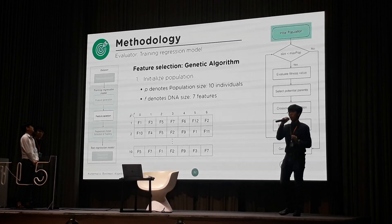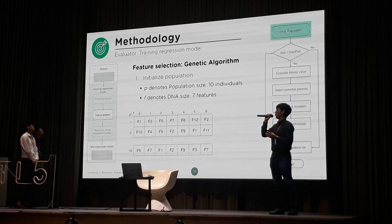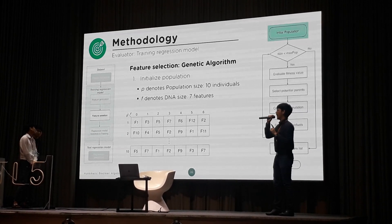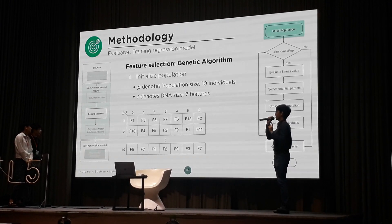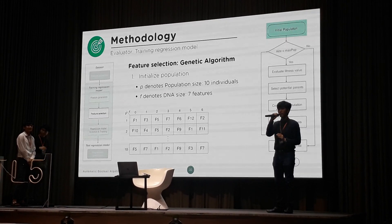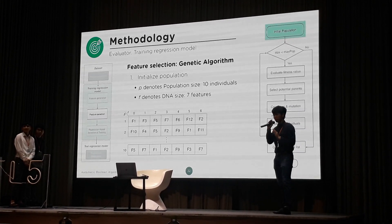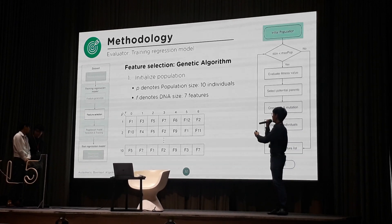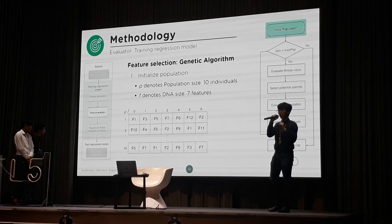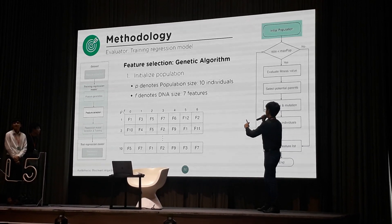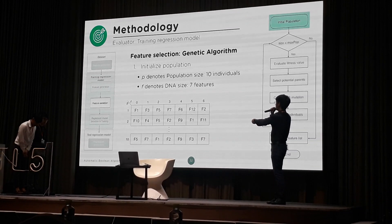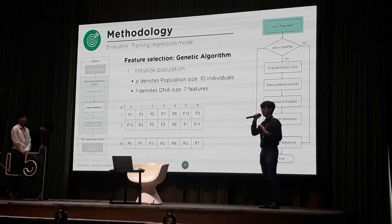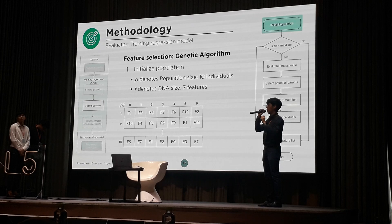We have a population of size 10. In easy words, there are 10 persons in one population and each person will have a DNA of length 7. The DNA has chromosomes — this is kind of like a biology algorithm. Each chromosome will contain one feature. For example, person number one has features 1, 3, 5, 7, and so on. This will be randomly picked; we're not going to permute, we're going to randomly pick.